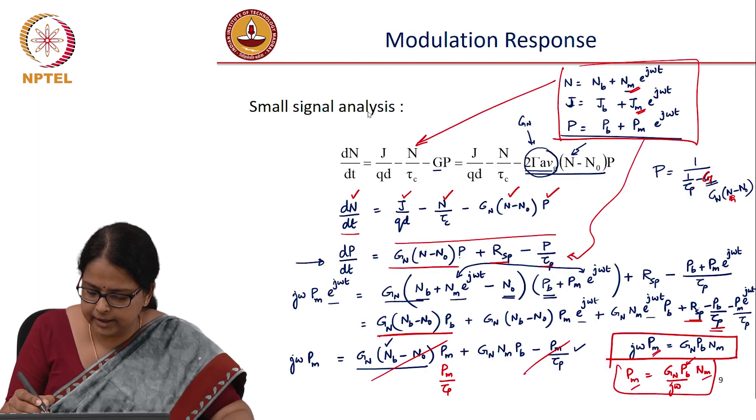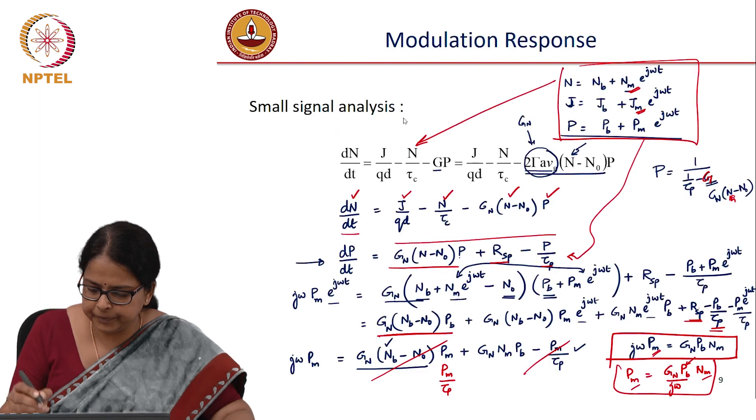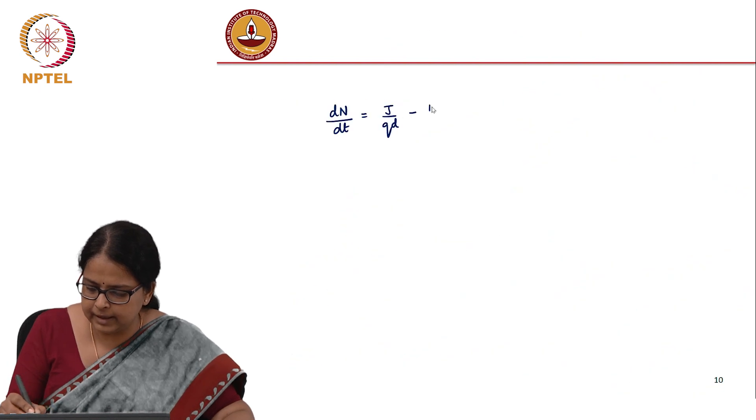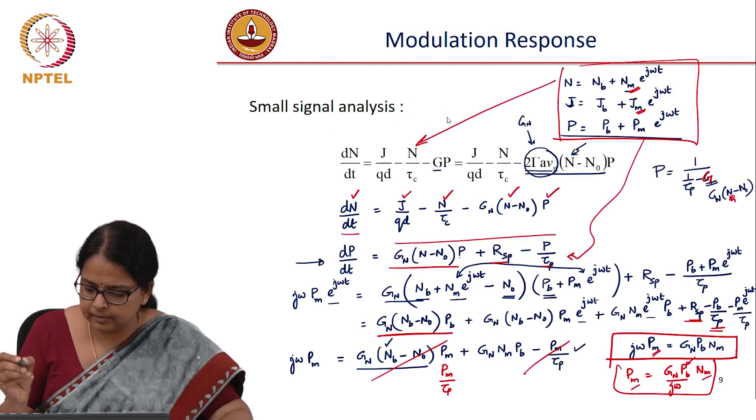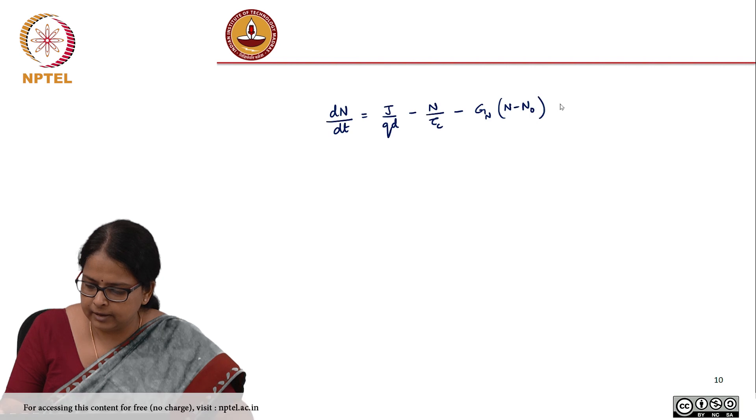You have dn/dt equals j/(qd) minus n/tau_c minus g(n-n_0) times p.